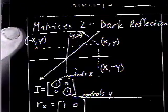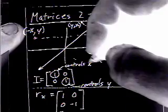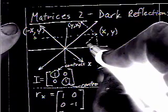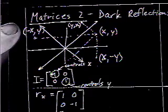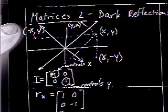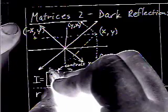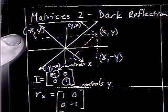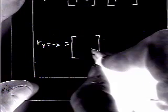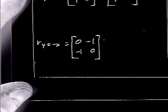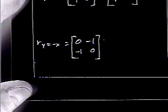Lastly, the last reflection matrix is to reflect across the line y equals negative x. Not only does this one switch x and y, it also makes both of them negative. So this point becomes (negative y, negative x). We want to make both values negative and switch their locations. That gives us our final reflection matrix. Those are your four basic reflection matrices.